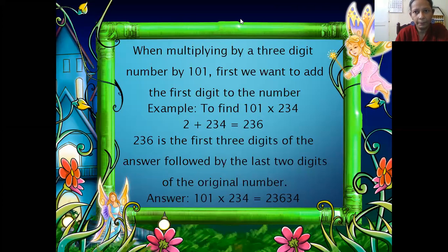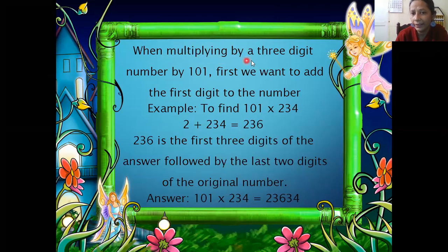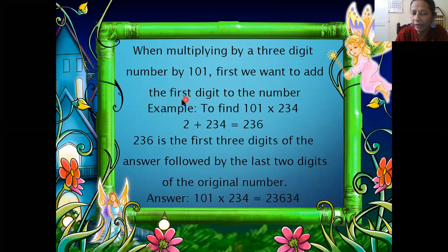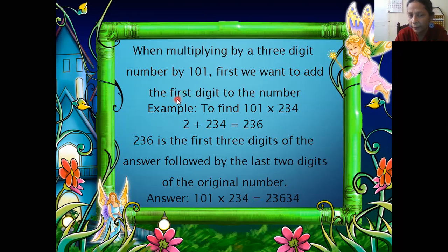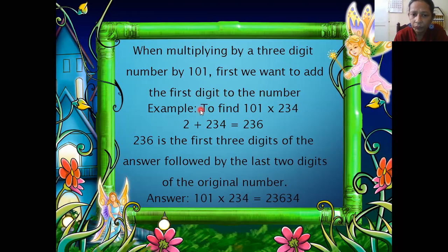Now look at this example — I am going to explain how you do this. When you are multiplying a three-digit number by 101, as I explained in the previous example, first we want to add the first digit to the entire number. The question is to multiply 101 by 234.